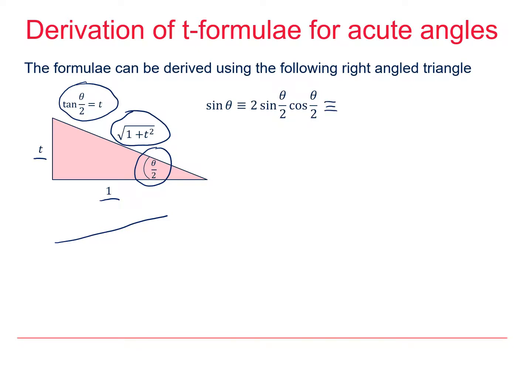So we keep the 2 and sin(θ/2) is going to be opposite t over hypotenuse √(1 + t²), and then cos(θ/2) is going to be adjacent 1 over the square root of 1 plus t squared.